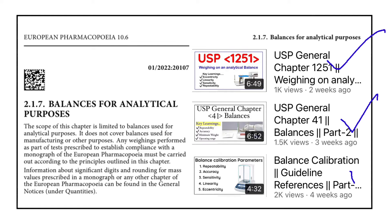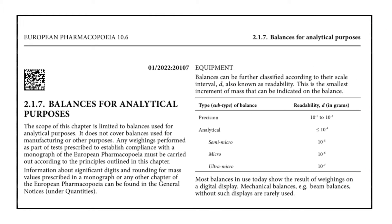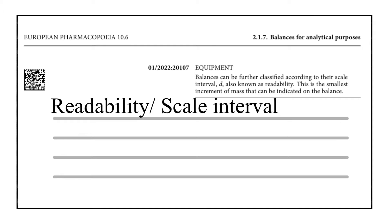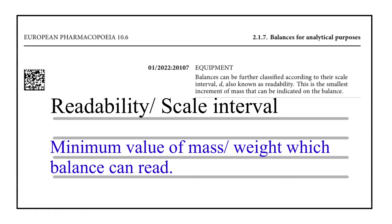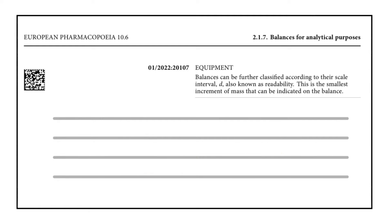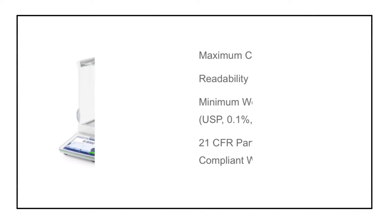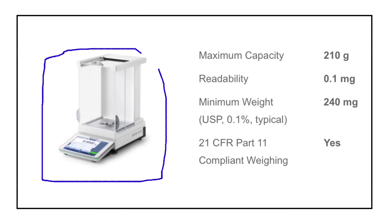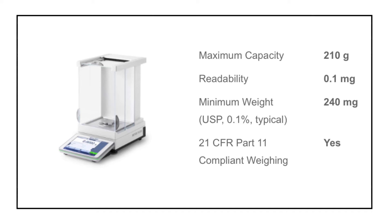Those who have seen previous videos of the Pharma Pill channel related to USP chapter 41 and 1251 may already know the term readability or scale interval. Readability or scale interval is defined as the minimum value which a balance can read, or the minimum value which a balance can display. For example, this Mettler Toledo balance can read a minimum value of 0.1 milligram — that is its readability.